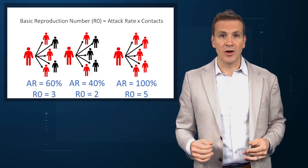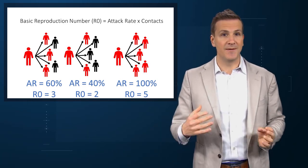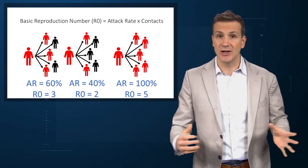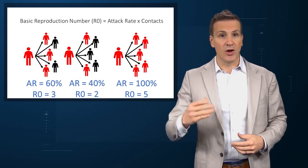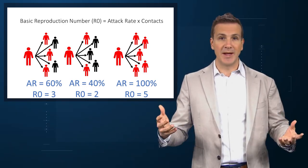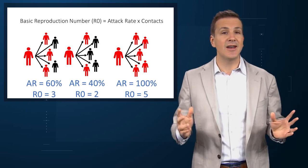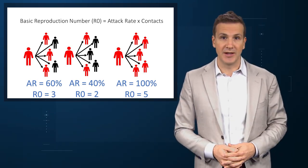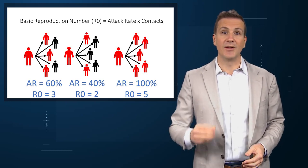Logically, if the R-naught is less than 1, a disease outbreak should wane over time, and if it's greater than 1, cases should continue to increase. Seasonal flu, for example, has an R-naught of around 1.5. The Spanish influenza of 1918–1919 had an R-naught as high as 2. Chickenpox, which is fairly infectious, has an R-naught of around 5.